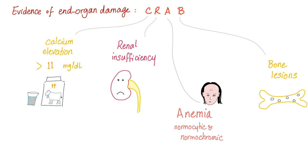I have lots of mnemonics today and they get better as you watch. So if you didn't like the first mnemonic, just stay tuned and stick around because it gets better. First, evidence of end organ damage: you have CRAB. But if you draw a carton of milk, a sad kidney, a pale person, and a bone with multiple punched-out lytic lesions, you'll never forget it. So: high calcium, renal insufficiency, anemia, and bone lesions.